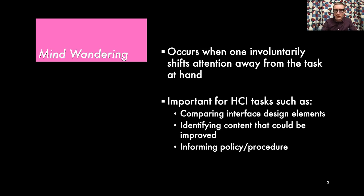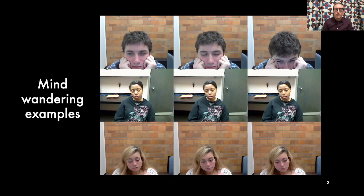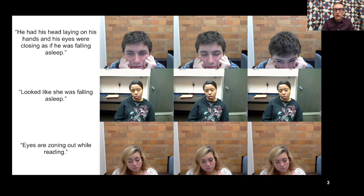In this paper, we approached the measurement problem from a visual perspective. I'll show examples of three different participants from our study where we recorded videos of what they looked like when mind-wandering, as they self-reported while reading text on a computer screen. We also showed these videos to third-party observers who gave justifications for why they thought participants were mind-wandering or not. Observers frequently mentioned themes like zoning out or falling asleep.